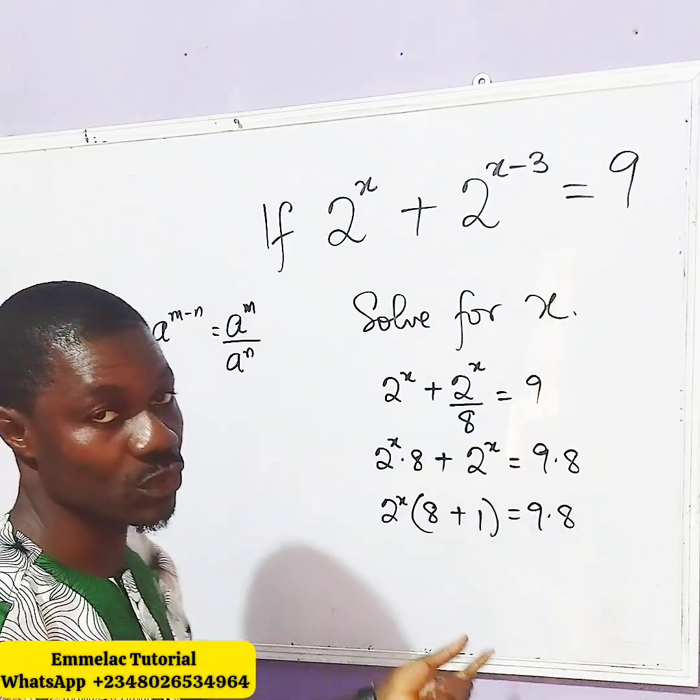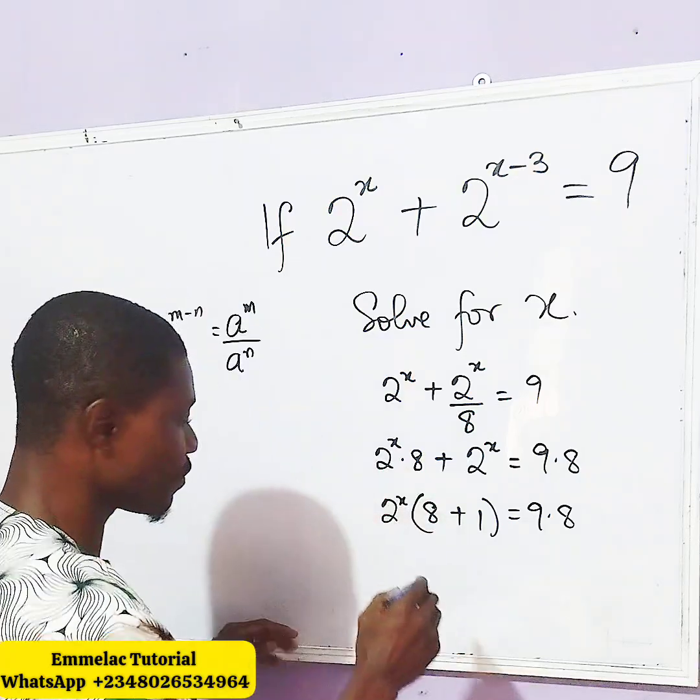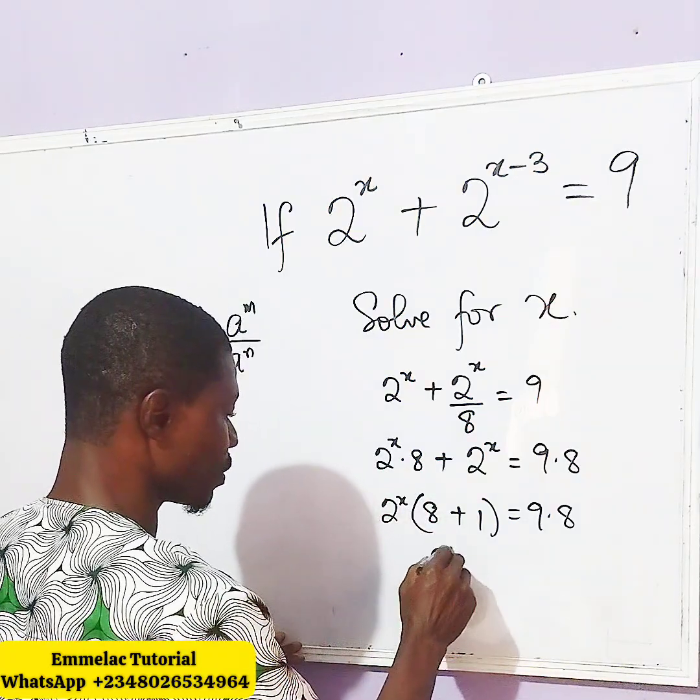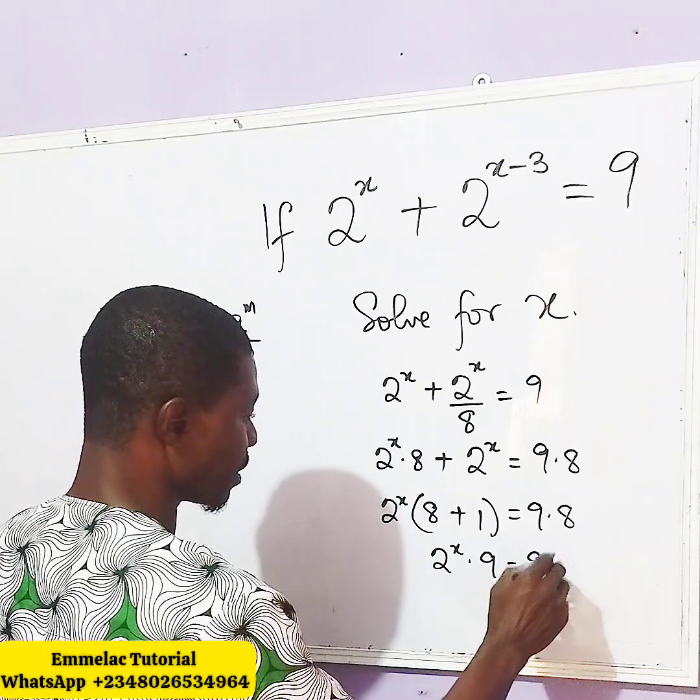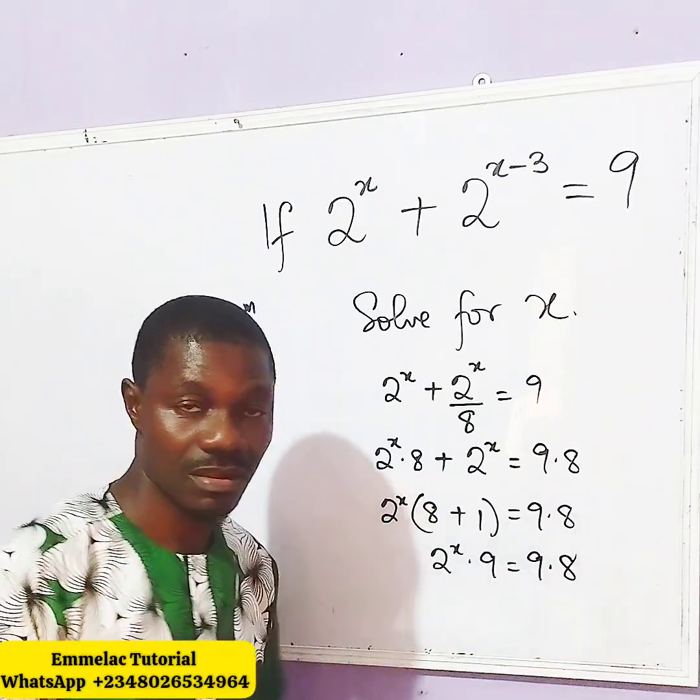Now, you can see here 8 plus 1 equals what? 9. So, let us divide both sides. Let us have 2 raised to x times 9, then equals 9 times 8.